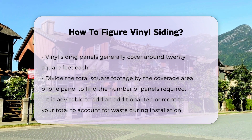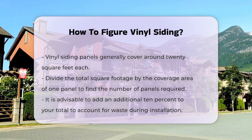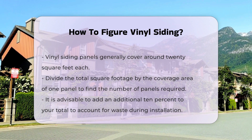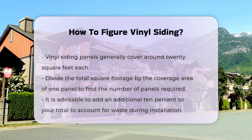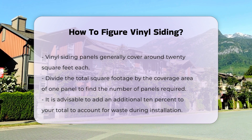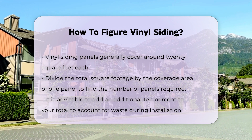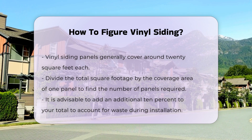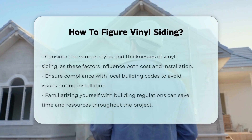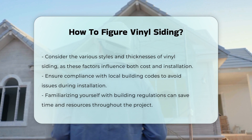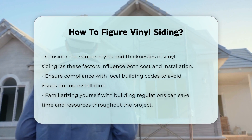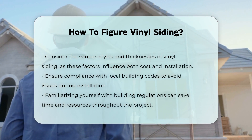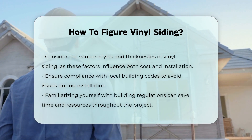It is wise to add an additional 10% to account for waste during installation. Additionally, consider the type of siding you want, as styles and thickness can vary. This will affect the overall cost and installation process.